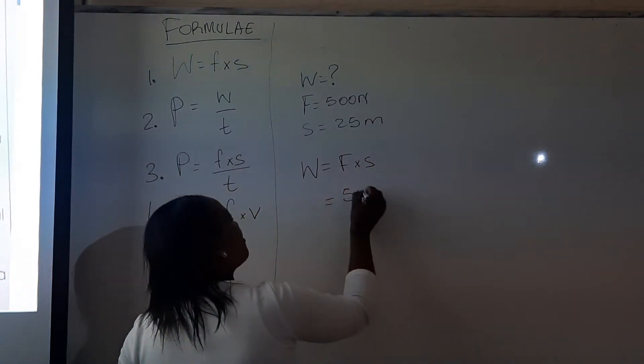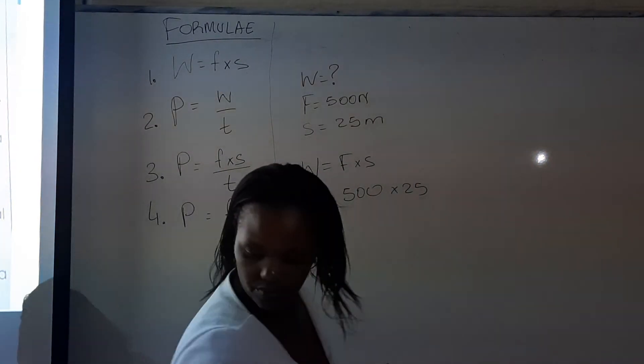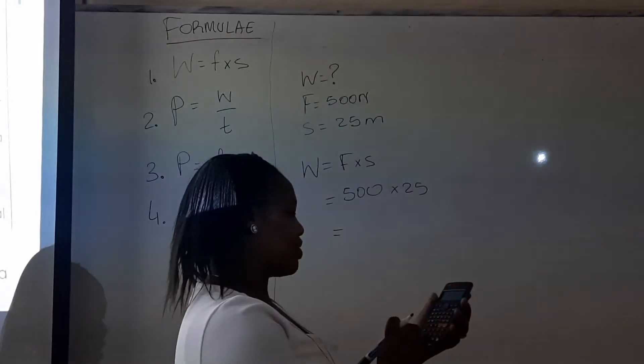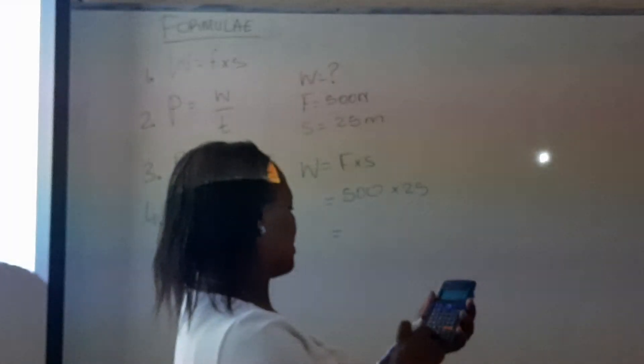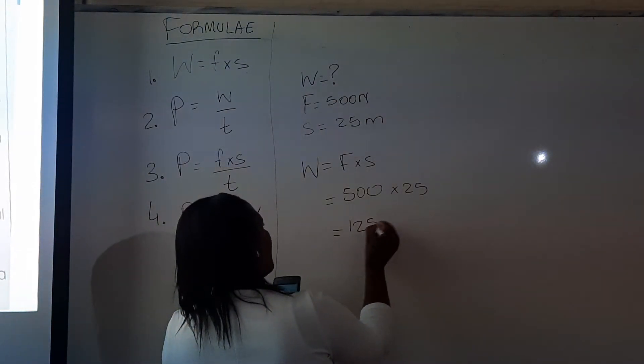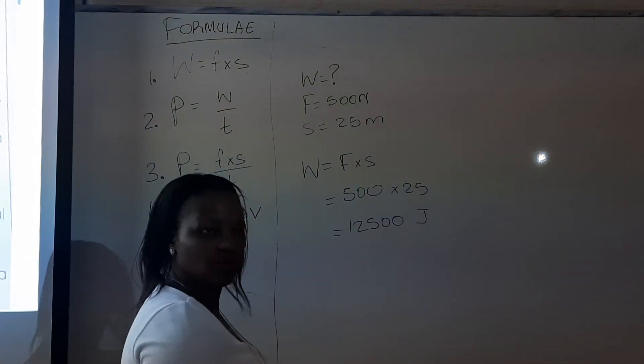The force is 500 and the distance is 25 meters. So, we multiply it out. We get 1, 2, 5, 0, 0 joules. We said work done is in joules.